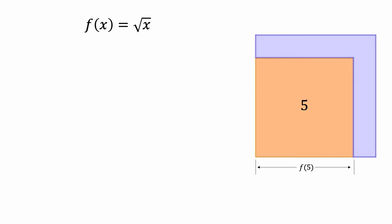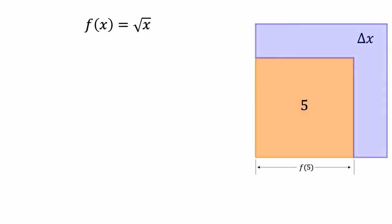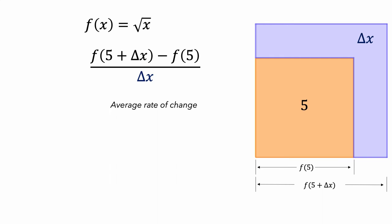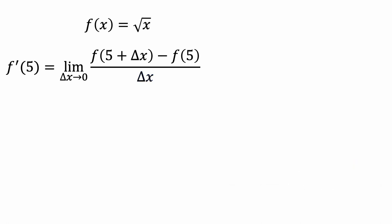Now imagine the square's area increasing by delta x square centimeters. Then the length of the side of this larger blue square would be f of 5 plus delta x centimeters. So the average rate of change of the square's side length with respect to its area is given by the change in the square's side length — f of 5 plus delta x minus f of 5 — divided by the corresponding change in the square's area. To get the instantaneous rate of change, we'll use the limiting value of this average rate of change as the change in the square's area approaches zero. Since we know a formula for f, we can replace f of 5 plus delta x with its square root and f of 5 with its square root.